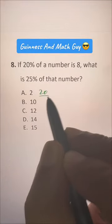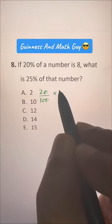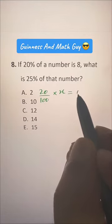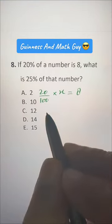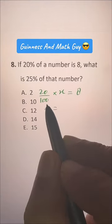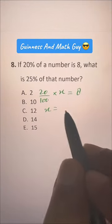20% of a number that is X is equal to 8, right? Now, X will be, this 20 over 100 will become 100 over 20 when it changes the side.